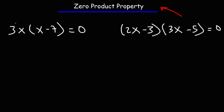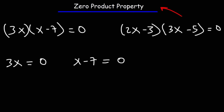For the first equation, we set each factor equal to zero: 3x equals zero, and x minus 7 equals zero. For 3x equals zero, we divide both sides by 3 — 3x divided by 3 is X, and zero divided by 3 is zero — so the first answer is X equals zero.